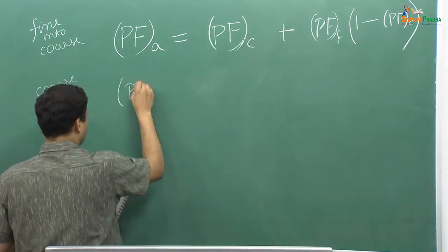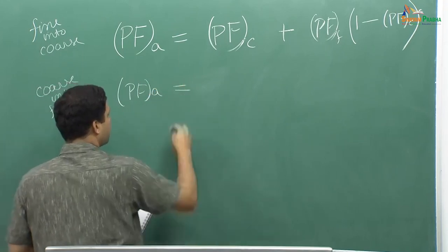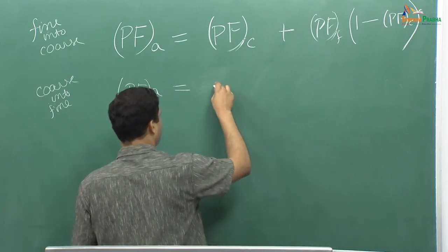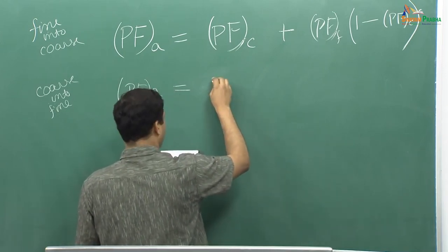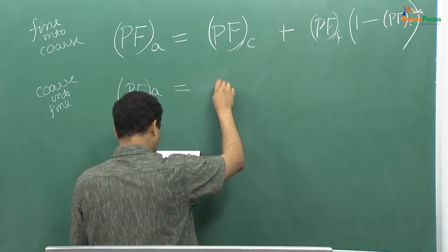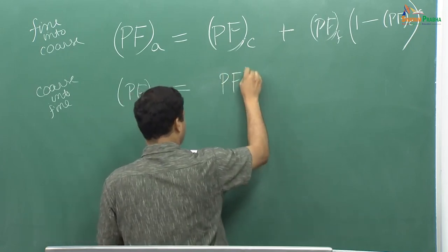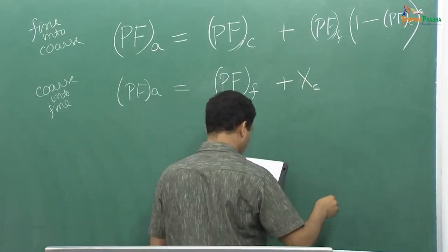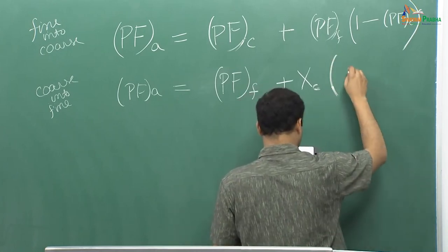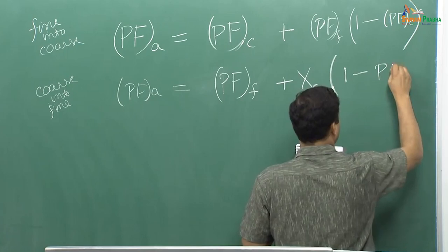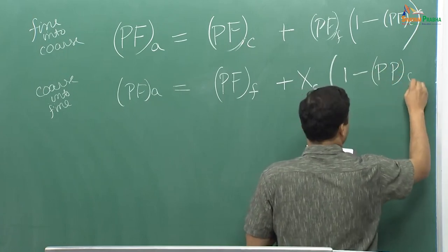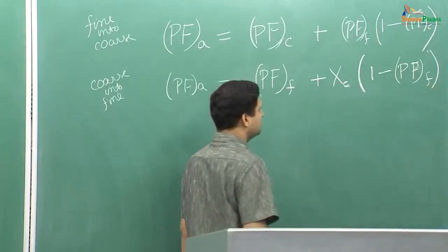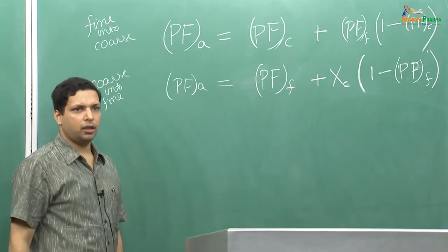The second case was coarse particles going into fine, and for that we had a relation: PF as a function of Xc, where Xc is Vc by Vt — that is, what percentage of coarse grain exists with respect to the total number of grains. Xc is a variable; it can change from 0 to 100. This is the relation obtained in the previous class.